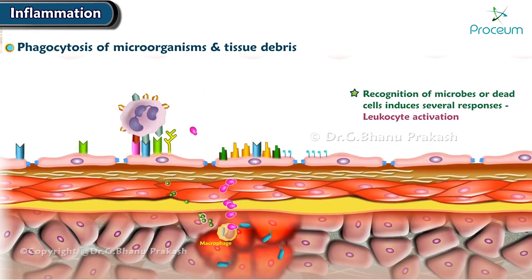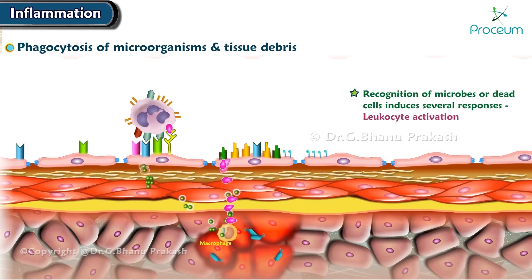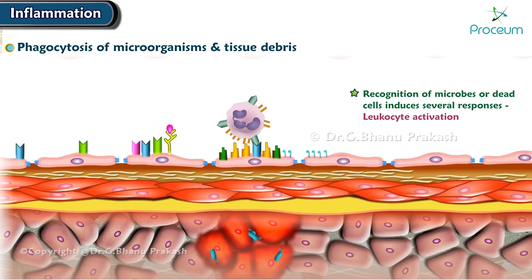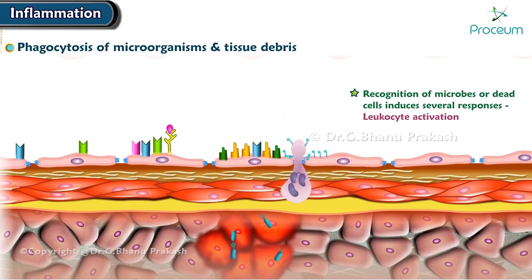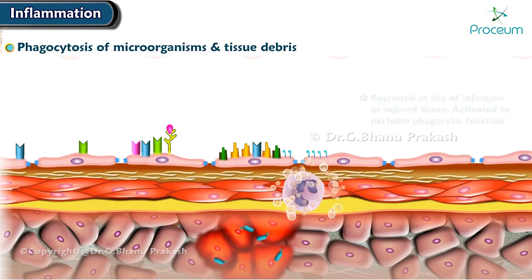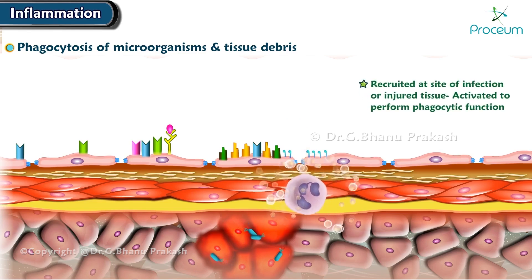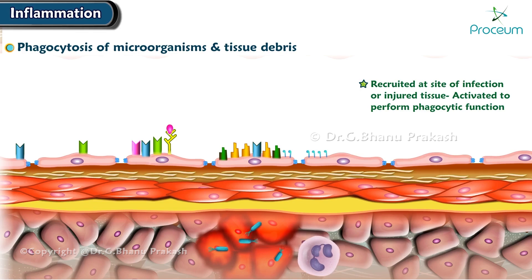Recognition of microbes or dead cells induces several responses in leukocytes that are collectively called leukocyte activation. After leukocytes, particularly neutrophils and monocytes, have been recruited at the site of infection or injured tissue, they must be activated to perform the phagocytic function.